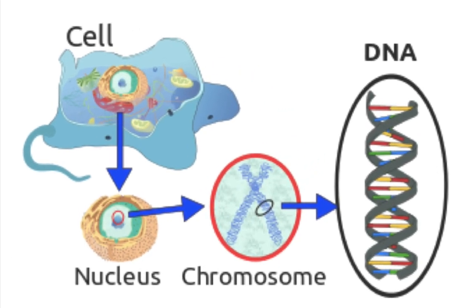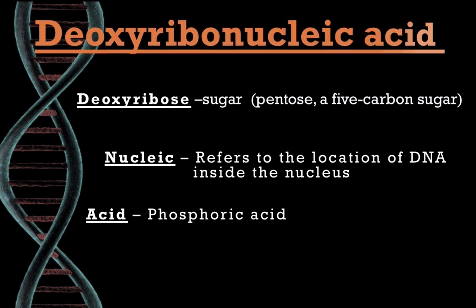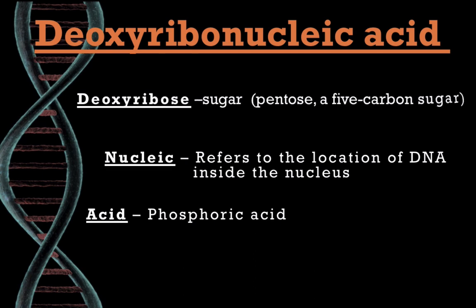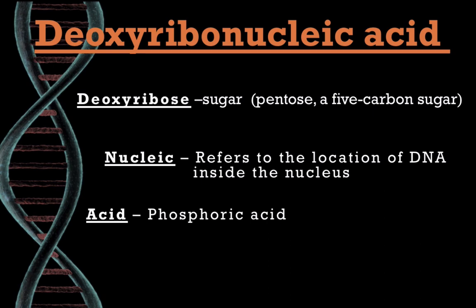DNA is the acronym for deoxyribonucleic acid. Deoxyribose is a sugar known chemically as a pentose — a five-carbon sugar. Nucleic refers to the location of DNA inside the nucleus. The molecule was originally called Nuclein by Frederick Meischer, the man who discovered DNA in 1869. Acid refers to phosphoric acid.